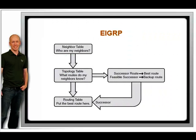EIGRP is a hybrid routing protocol developed by Cisco to replace IGRP. It uses a diffusing update algorithm. Similar to RIP, it has a maximum hop count, but its maximum is 224.